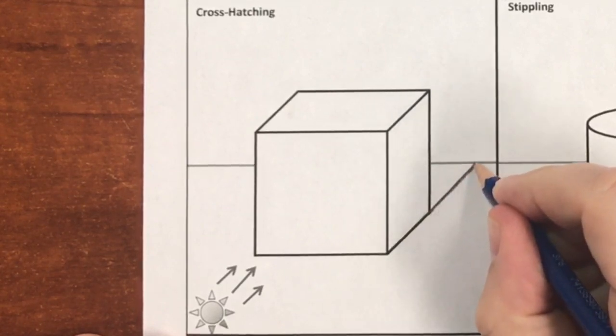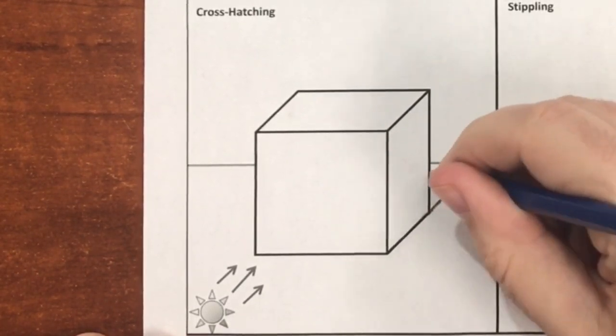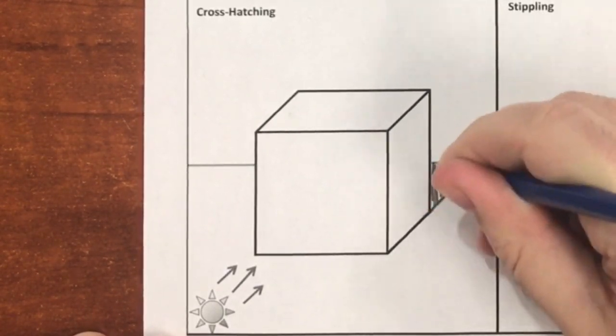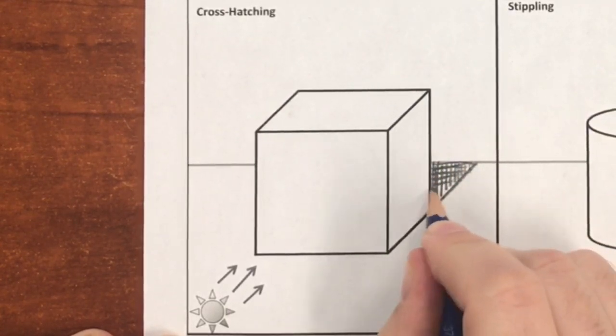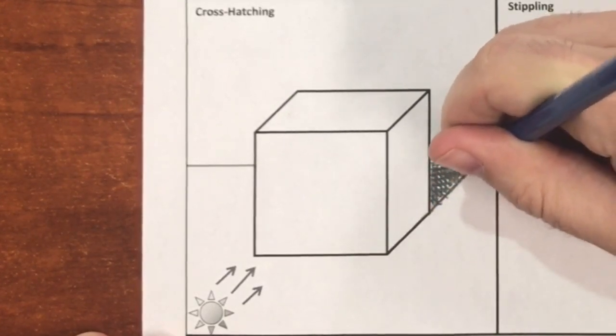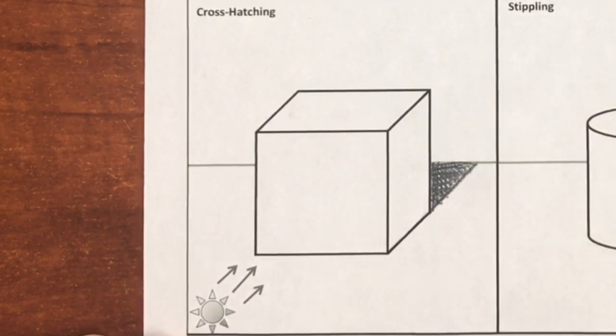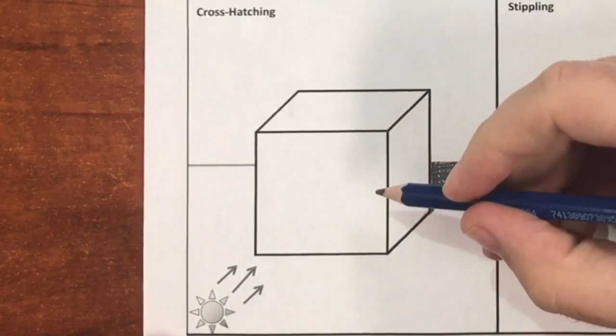On the cube we're going to be using the cross hatching technique. Again, double check to make sure that your shadow is following in the opposite direction of the light source. Start again with the darkest region of the shape, usually the cast shadow or the core shadow.